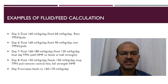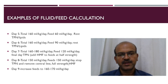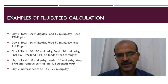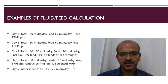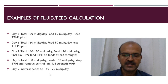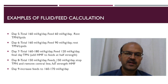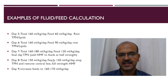By day 8, the baby reaches 150 ml per kilo per day. We were giving close to 180 ml the previous day, but here we can stop at 150. When the baby reaches 150, we can remove the central line. We can make it full strength HMF. By day 9, we can increase to 160 to 170 ml, or give clear fluids through the central line or a peripheral line to reach that 160 to 170 ml.